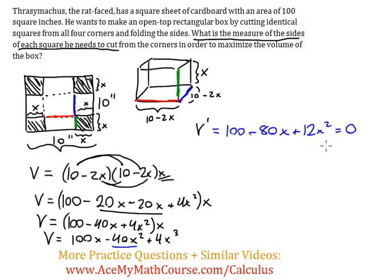And now I will actually just divide both sides of the equation by 4. Make things simpler. Right? Before we try to factor or solve this in whatever way you want. So 100 divided by 4 is 25, 80 divided by 4 is 20, and 12 divided by 4 is 3. Great.